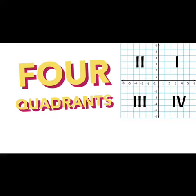The coordinate plane is organized into four quadrants: 1, 2, 3, and 4. You'll notice the quadrants are labeled with Roman numerals instead of regular numbers.